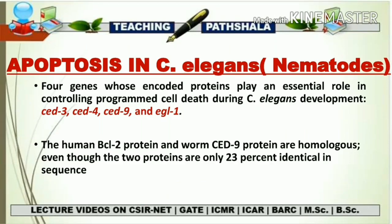In our previous video we saw what are the different genes responsible for apoptosis inside an animal. In this video we are going to see what genes are responsible for apoptosis inside C. elegans, which is also known as a nematode. There is an identification of a total of 4 genes responsible for apoptosis in C. elegans, and those genes are CED3, CED4, CED9, and EGL1.